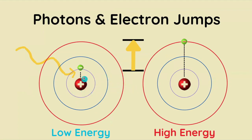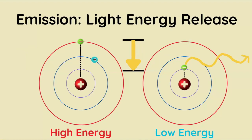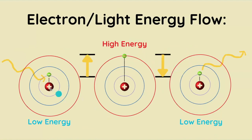Here we have absorption of the photon by the electron, so it graduates to a higher energy shell — the electron now has more energy. And this is emission, where the electron releases energy in the form of a photon.